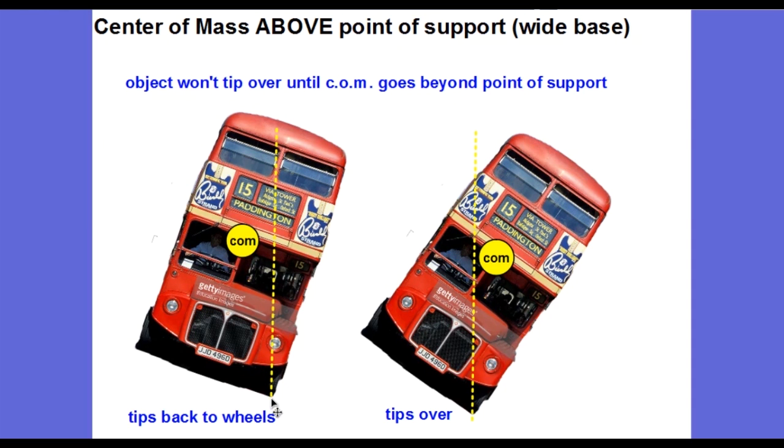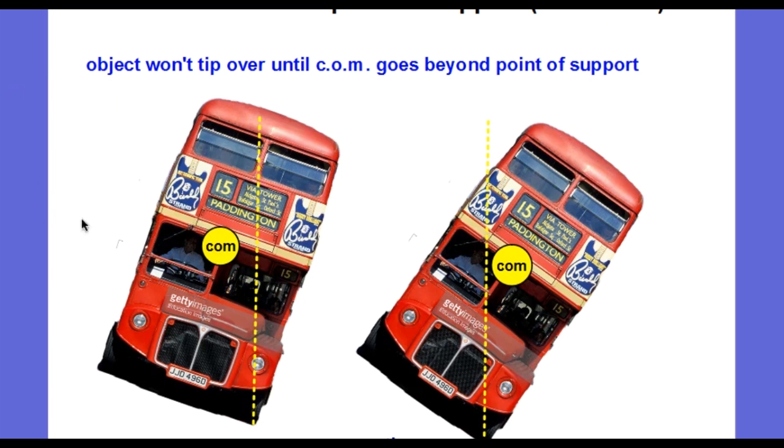So we've shown that an object with a fairly wide base will not tip over until the center of mass passes the point of support. The center of mass, if it passes this point to the right, then the bus will tip over. Just like the cups with the water in it, they will tip over when the center of mass passes the point of support. It's important to keep in mind that these analyses of objects tipping over are applicable to objects that are still and not moving. The situation is a bit different when the bus is going around a turn and driving, but that is a more complicated analysis, which we won't cover in this video.